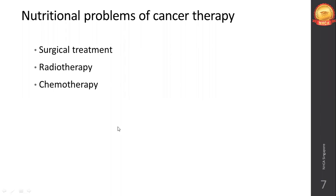Chemotherapy causes diarrhea, nausea, food aversion, and fatigue. Patients tire of chewing food, leading to deficiencies and fluid/electrolyte imbalance. Chemotherapy drugs inhibit absorption of certain micronutrients, so nutritional supplements are prescribed alongside. Hair loss (alopecia) appears within one to two weeks of starting chemotherapy.